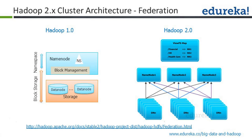The federated name node is mostly a theoretical concept. People do not use it because of the many challenges it has. None of the actual Hadoop distributions come with any federation architecture support out of the box. If you want, you can take this concept and, with your own networking team, build a federated name node setup. That is the reason why federated name node, although a good concept, is not used in actual production systems.